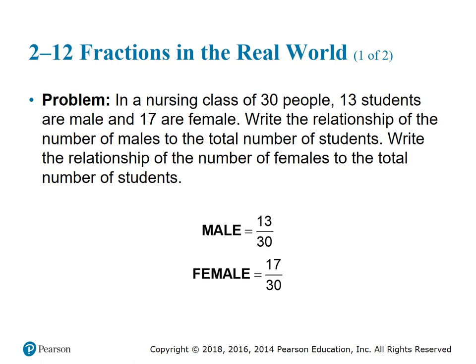Fractional parts or relationships are common in healthcare. Here's a real-world example: in a nursing class of 30 people, 13 students are male and 17 are female. We place the part 13 over the whole 30 for males, and 17 over 30 for females. Are both fractions reduced? Yes, they are.